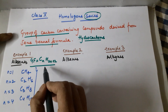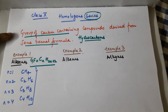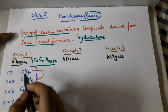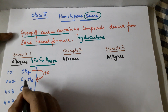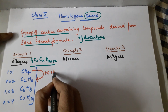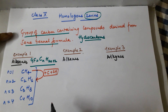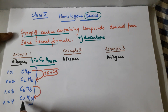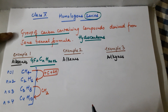So this is a homologous series of alkanes because all these compounds are derived from the same general formula. Now have a close look at any two successive compounds. As you go from one to the next, you are adding one carbon and two hydrogens — that is, a CH₂ unit. Whenever you move from one homolog to another, you go on adding a CH₂ unit to reach the next homolog.